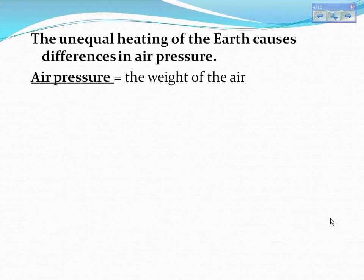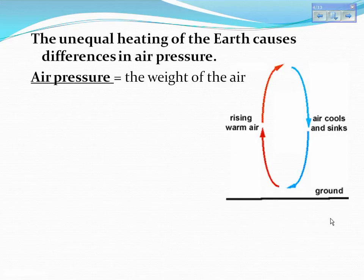The unequal heating of the earth causes differences in air pressure. Air pressure is the weight of the air. This diagram is showing you that warm air is less dense and it's going to rise, while cold air is more dense and it's going to sink.